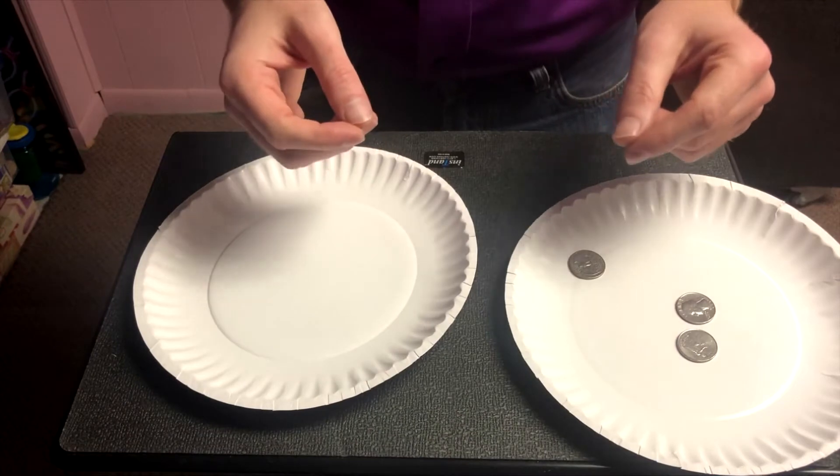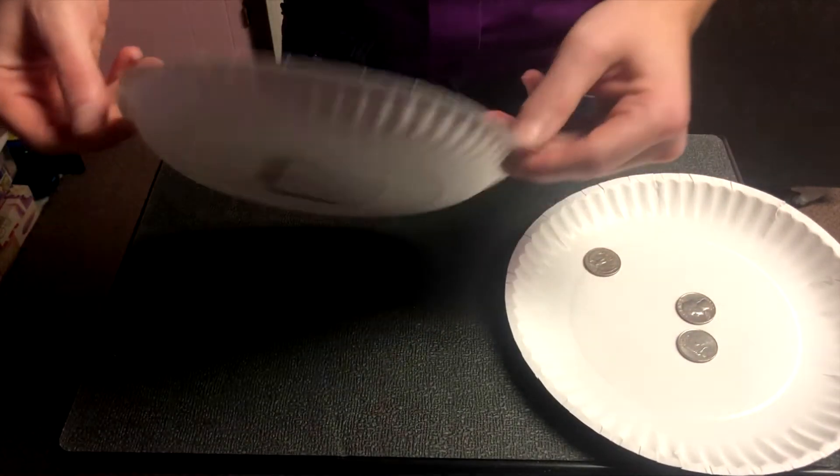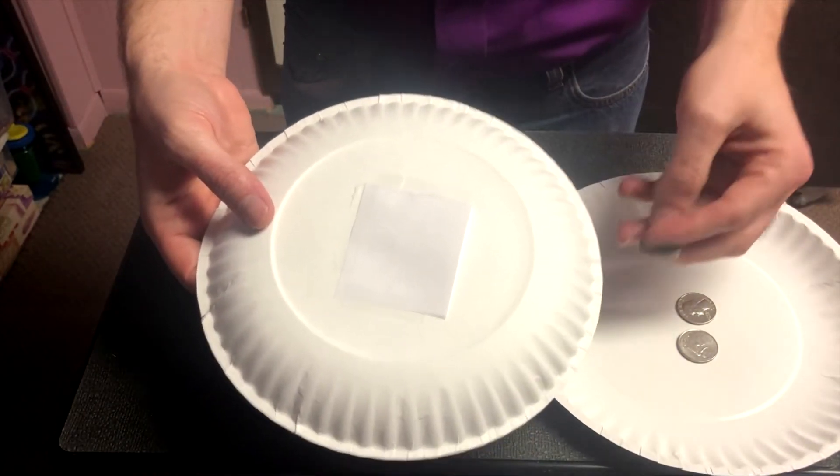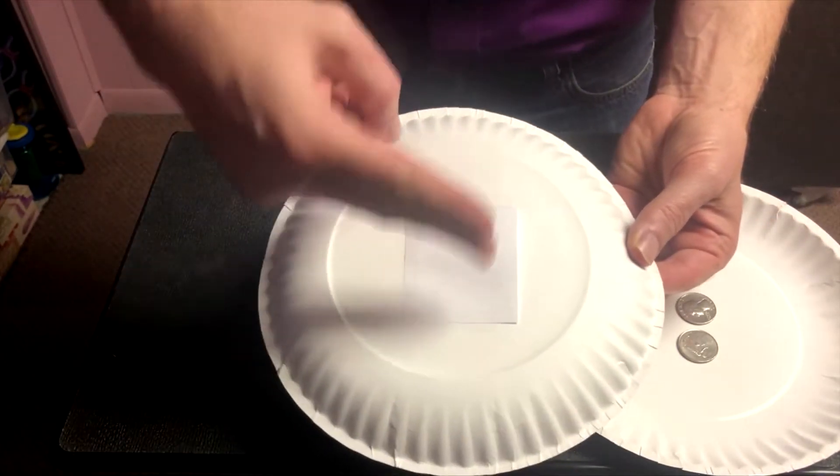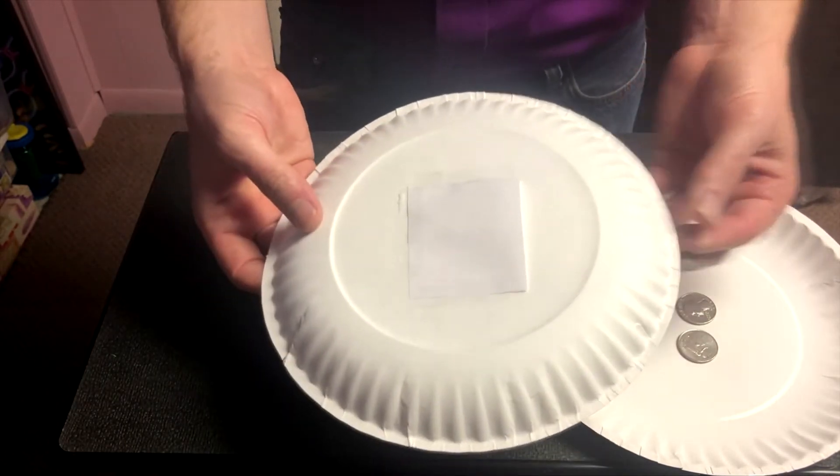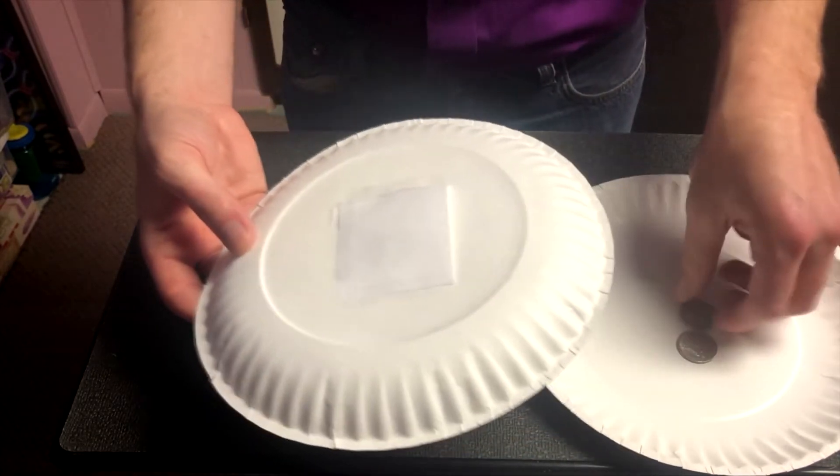Okay, here's the secret behind the multiplying quarter. The secret is in the plates. On the underside of the plate I have made a little paper pouch. With an adult's help you cut out a little piece of paper and you tape it on three sides to the bottom of the plate. You leave one side open and that's the side that the quarter goes into.